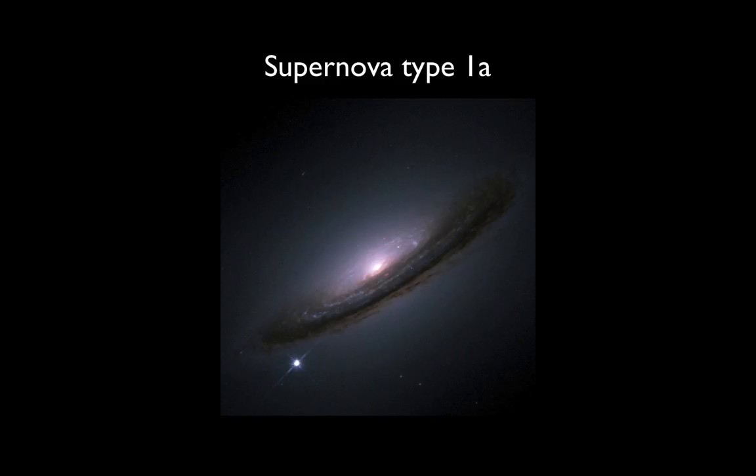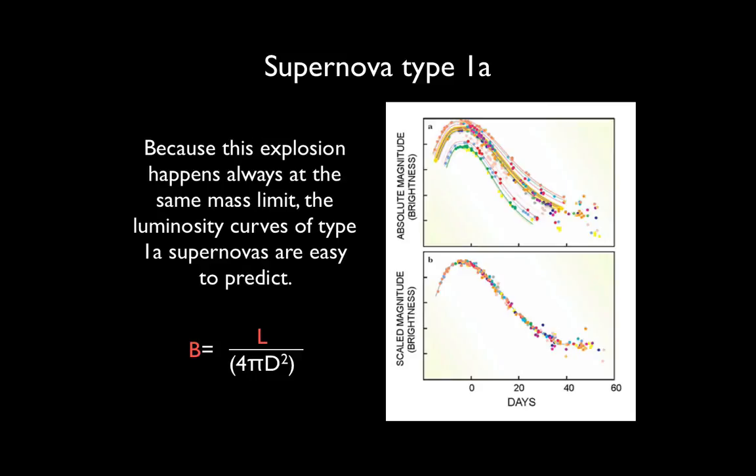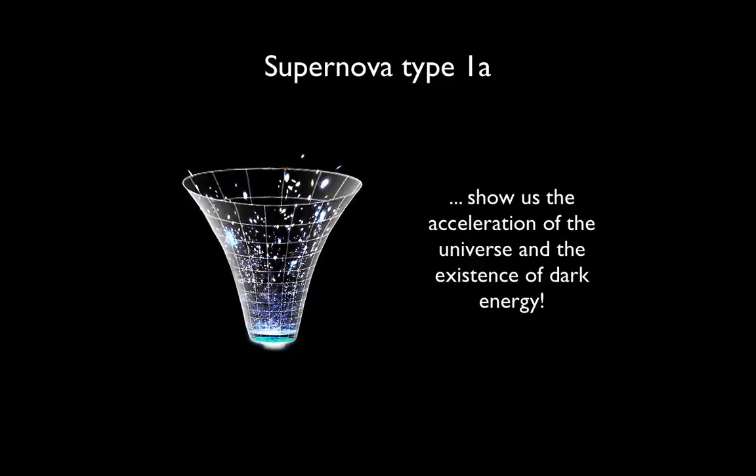Because supernovas are so bright, we can see them really far away. And if we know how intrinsically luminous they are, then we can use them as essentially measuring sticks. We can measure distances in the universe using supernovae very accurately. And in fact, it's supernovae type 1a that have told us that the universe is not only expanding, but it's accelerating in its expansion due to the presence of this mysterious dark energy. And that'll be the topic of another class.